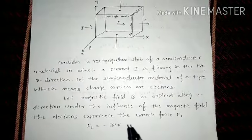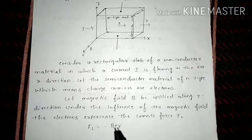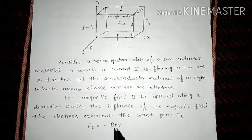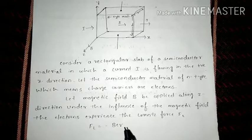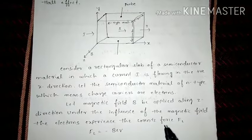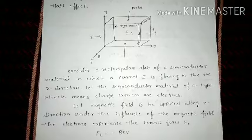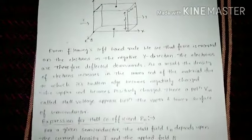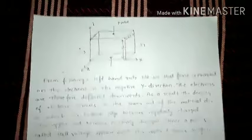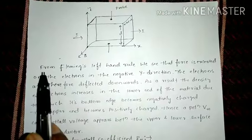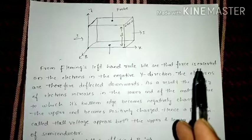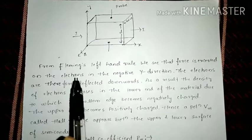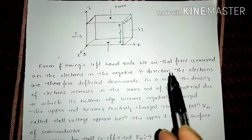The Lorentz force FL is equal to minus BeV, where B is the magnetic field, e is the charge on the electron, and V is the velocity of the electron. From Fleming's left-hand rule, we see that this force is exerted on the electrons in the negative Y direction.